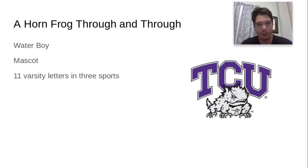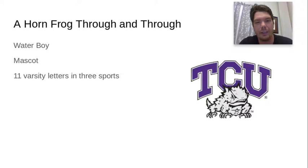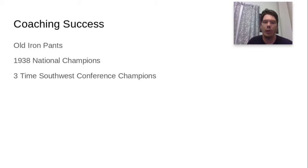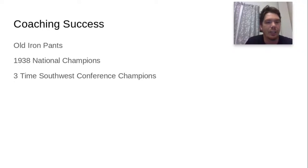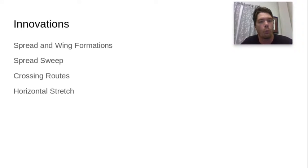A little bit of history. Dutch Meyer is a Horned Frog through and through, back in the early 20th century. He's a water boy and mascot for TCU back when they were located in Waco, Texas. He eventually becomes a student, then a coach. He gets 11 varsity letters in three sports, and he's nicknamed Old Iron Pants — basically because he was a hard-ass when it came to coaching. He led his team to the 1938 National Championship as well as three Southwest Conference championships before becoming athletic director at TCU.